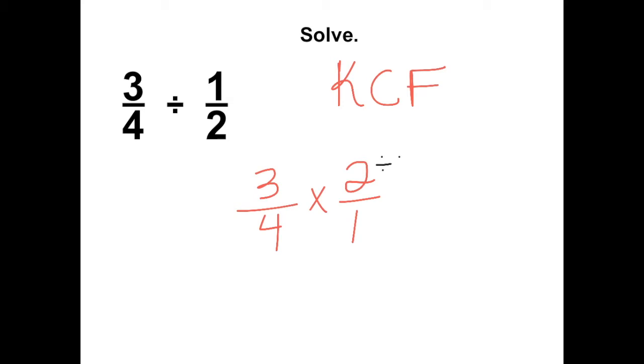2 and 4 can both be divided by 2. This simplifies to 1 and this simplifies to 2. Now we can multiply our numerators. 3 times 1 is 3. Multiply our denominators. 2 times 1 is 2.